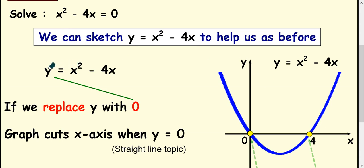What we're really doing is we're replacing the y with a zero here. So we're trying to see what happens, what x values make the y value zero, i.e. where does the graph cut the x axis because it cuts the x axis when the y value is equal to zero.